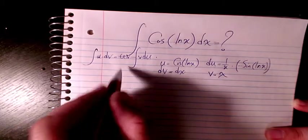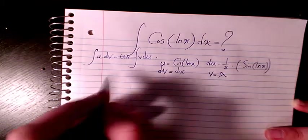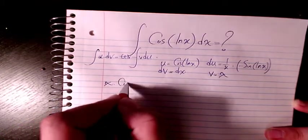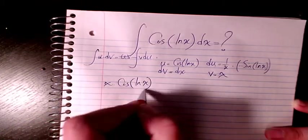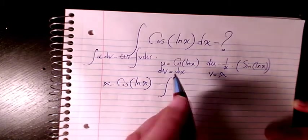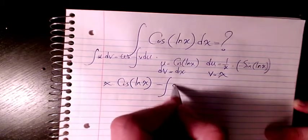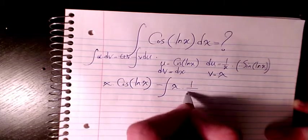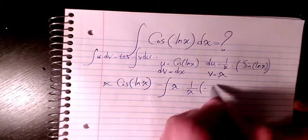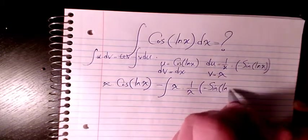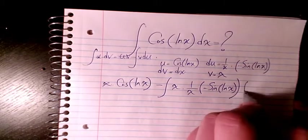So u times v will be x times cosine ln x minus v du. x times du, 1 over x, negative sine ln x, dx.